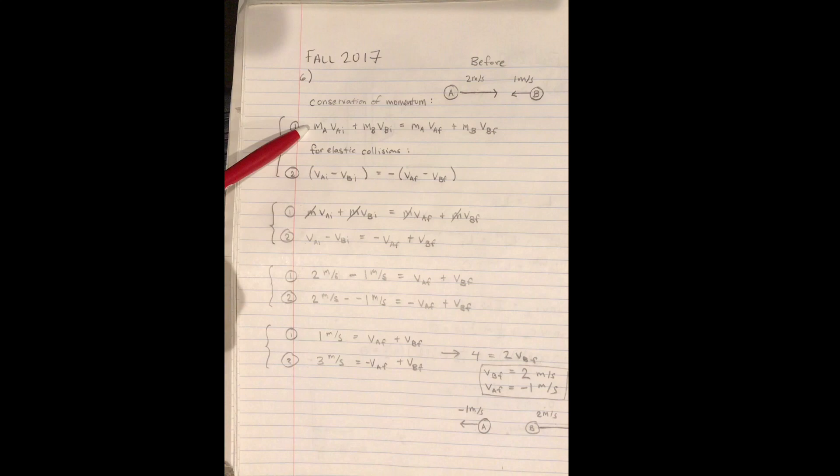And so we can write out conservation of momentum: MA VAI plus MB VBI equals MA VAF plus MB VBF. And we can write the second condition: VAI minus VBI equals the negative of VAF minus VBF.